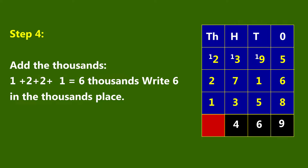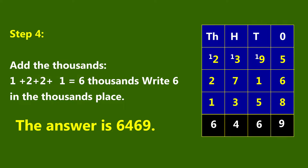Step 4: Add the thousands. One plus two plus two plus one is equal to six thousands. Write six in the thousands place. The answer is six thousand four hundred and sixty-nine.